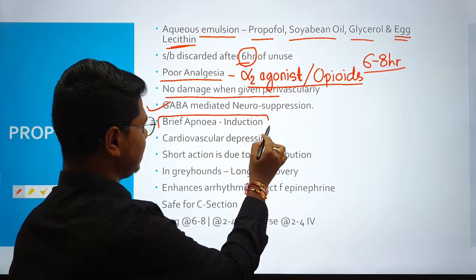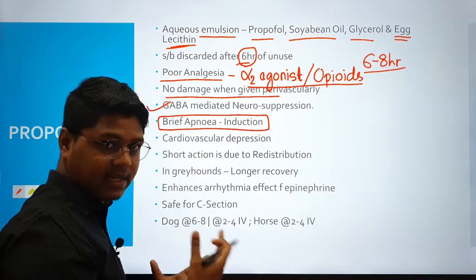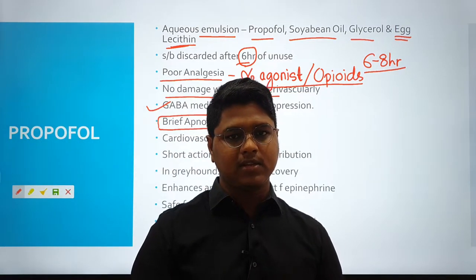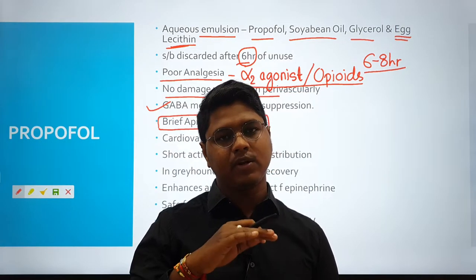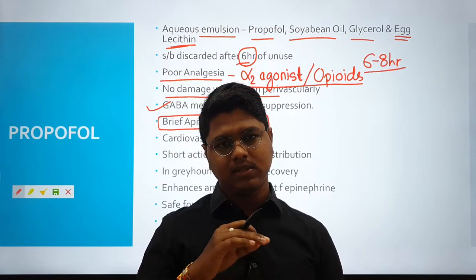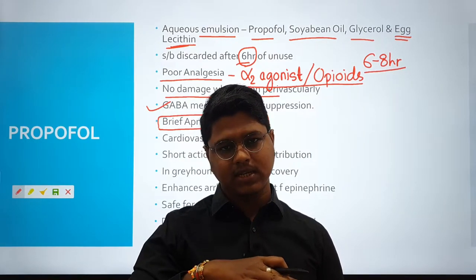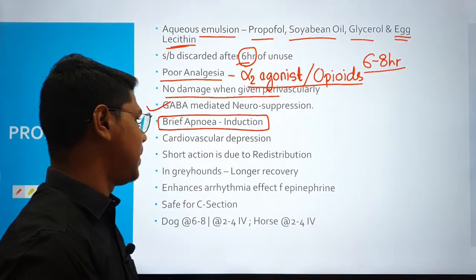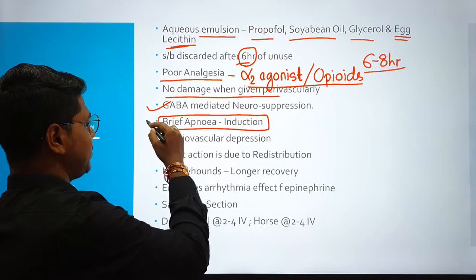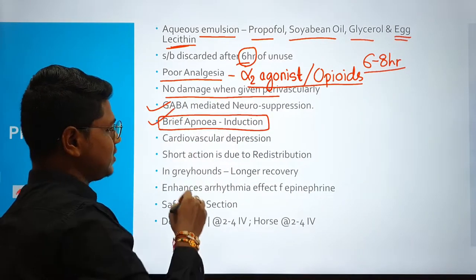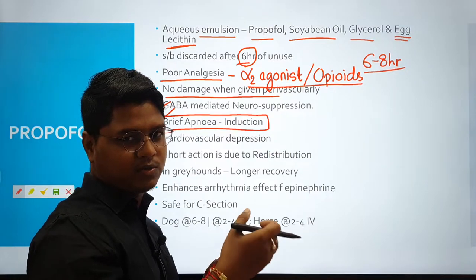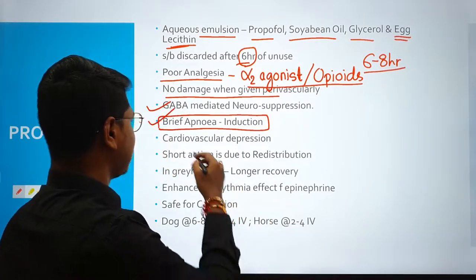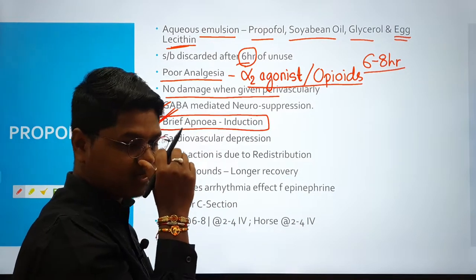This is very important practically: when inducing with propofol, there will be a brief period of apnea. You don't need to worry — it lasts maybe one to two seconds. The animal will take a deep breath, there will be a stoppage, then breathing returns to normal. Sometimes to avoid this, divide into two doses: give the first dose rapidly and the second dose slowly, so the apnea period can be minimized.